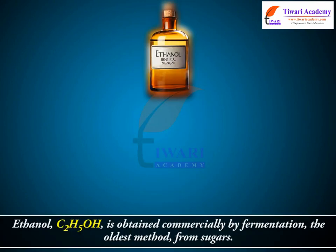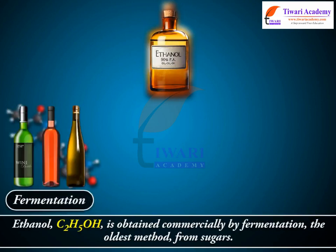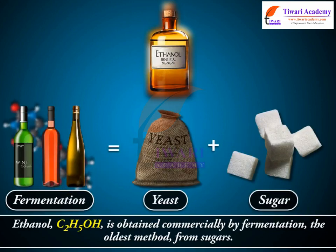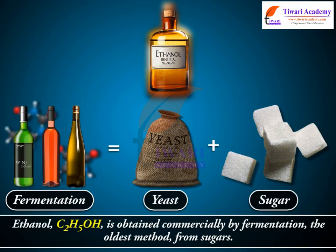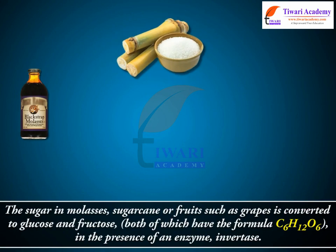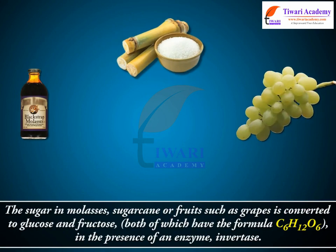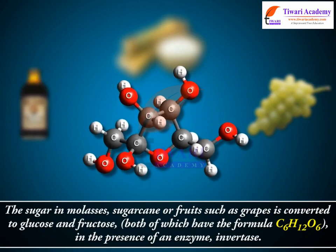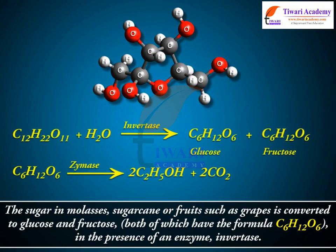Ethanol, C2H5OH, is obtained commercially by fermentation, the oldest method, from sugars. The sugar in molasses, sugarcane, or fruits such as grapes is converted to glucose and fructose, both of which have the formula C6H12O6, in the presence of an enzyme called invertase.